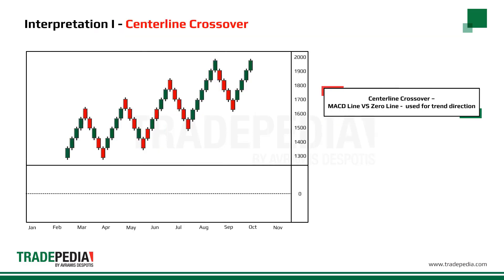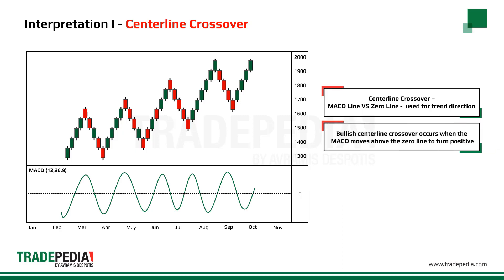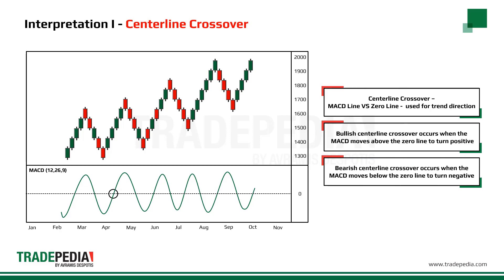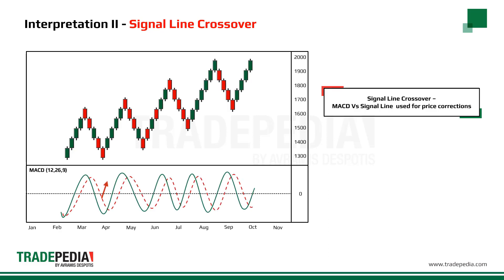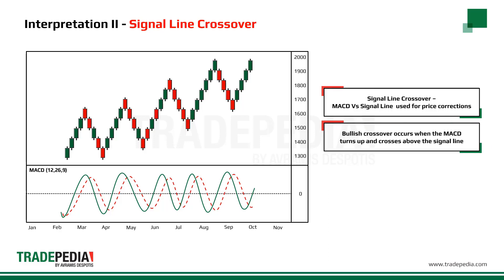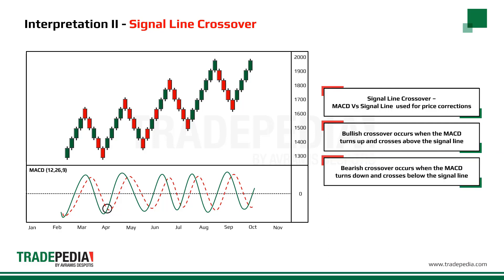The first interpretation is that of the centerline crossover, which refers to the MACD line versus the zero line and is used for trend direction. A bullish centerline crossover occurs when the MACD moves above the zero line to turn positive, while a bearish centerline crossover occurs when the MACD moves below the zero line to turn negative. Another interpretation is the signal line crossover, which refers to the MACD versus the signal line and is used for potential price corrections. A bullish crossover occurs when the MACD turns up and crosses above the signal line, while a bearish crossover occurs when the MACD turns down and crosses below the signal line.